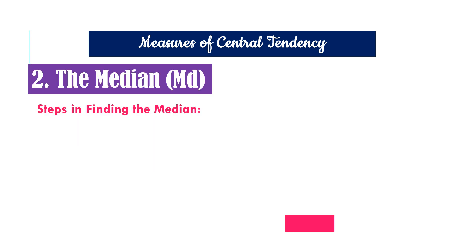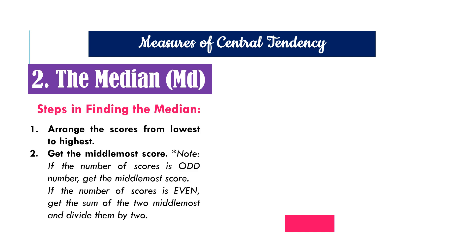The second measure of central tendency is the median. Here are the steps in finding the median. First, we arrange the scores from lowest to highest. And then after that, we get the middlemost score. Take note that if the number of scores is odd, or is an odd number, we simply get the middlemost score. However, if the number of scores is even, we have to find the average of the two middlemost numbers.